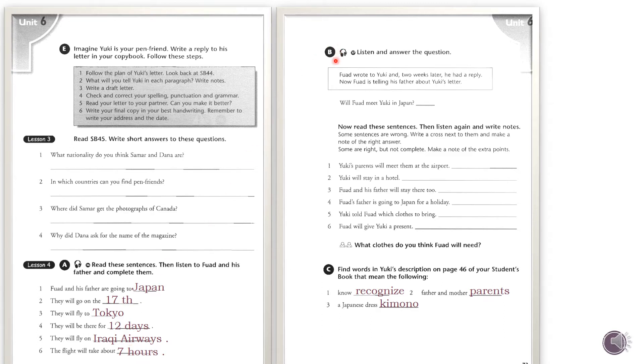What date will we travel? The 17th. And how long will we be in Japan? 12 days. 12 days, great! Which airline will we fly on? Iraqi Airways, of course, if they fly to Japan. Now we go to Exercise B. Listen and answer the questions, Track 37. And two weeks later, he had a reply. Now Fouad is telling his father about Yuki's letter.